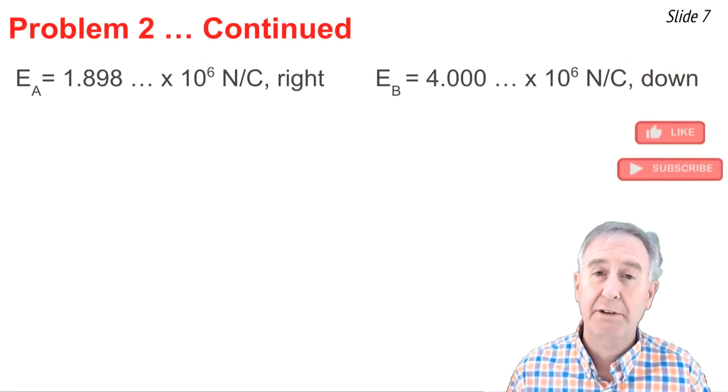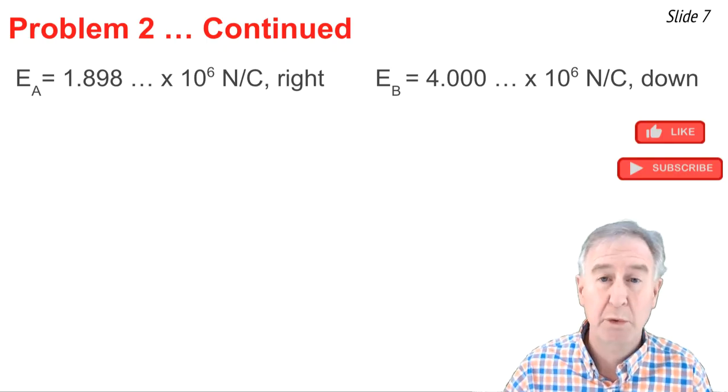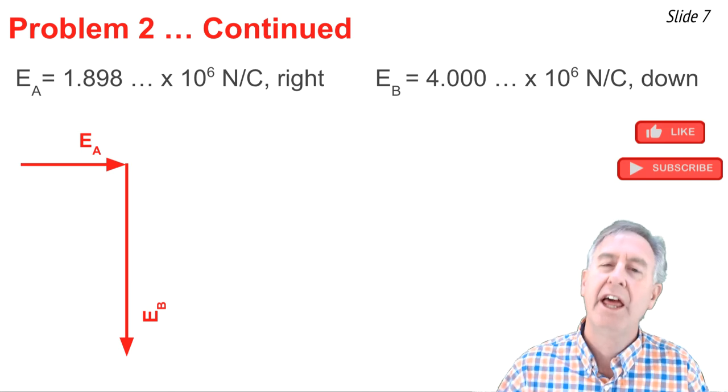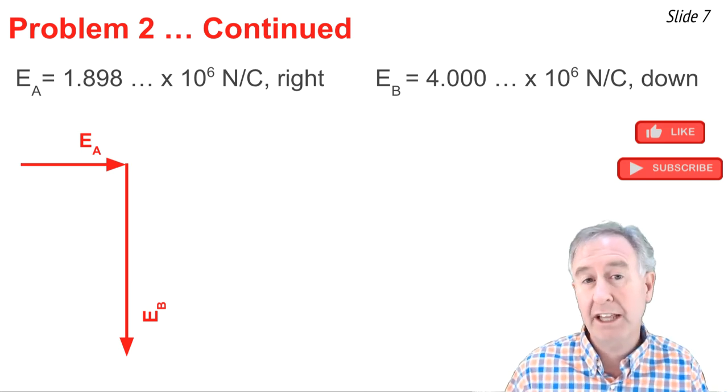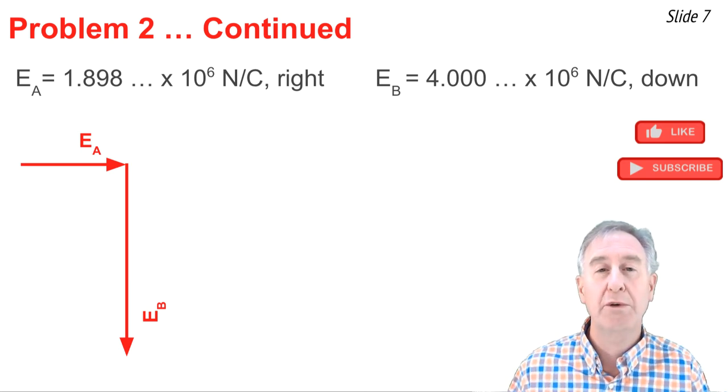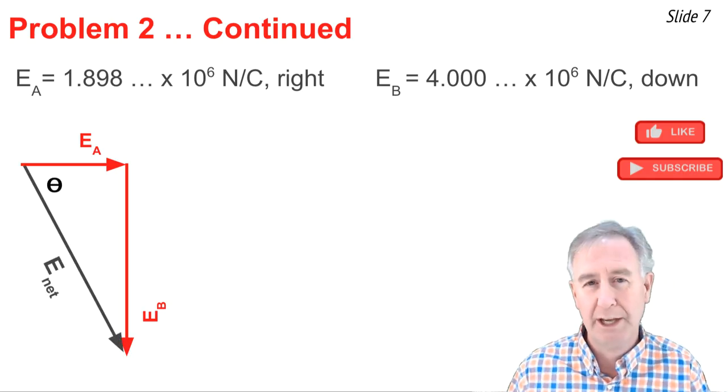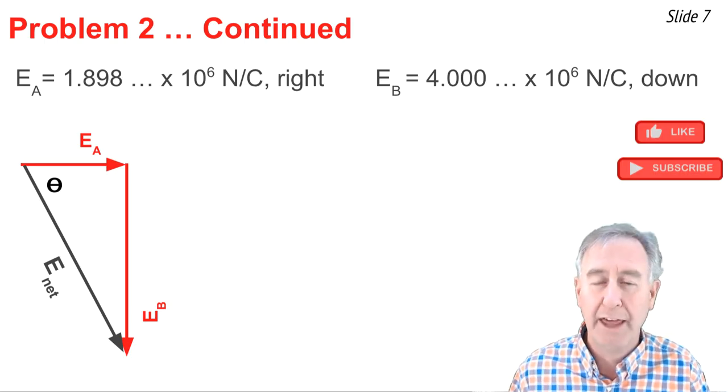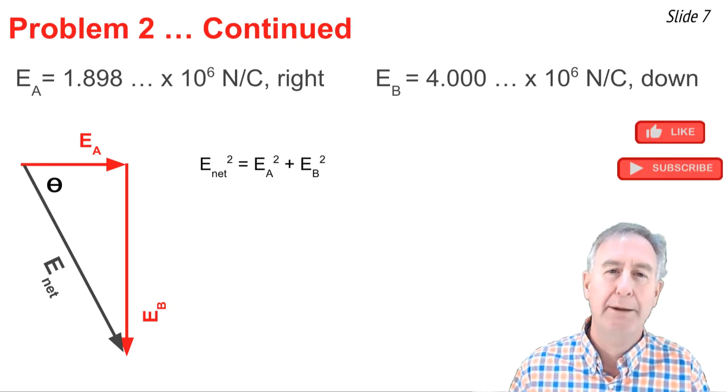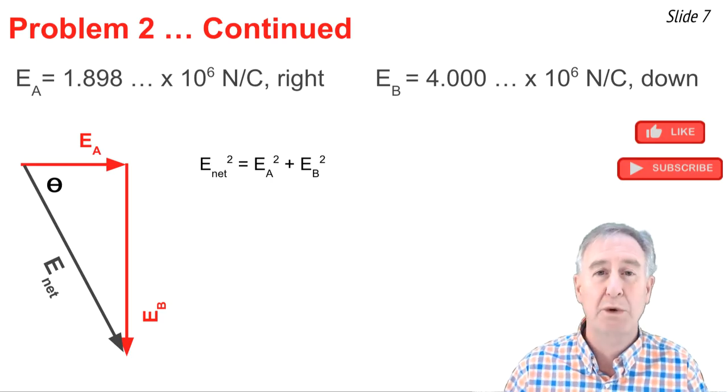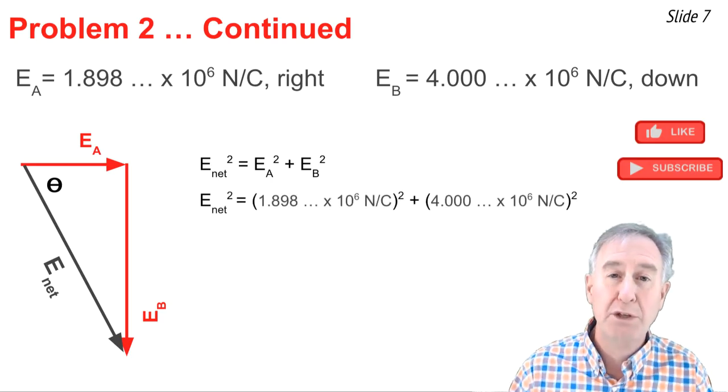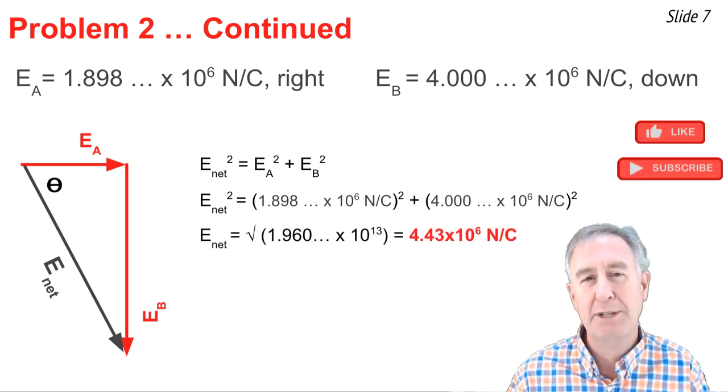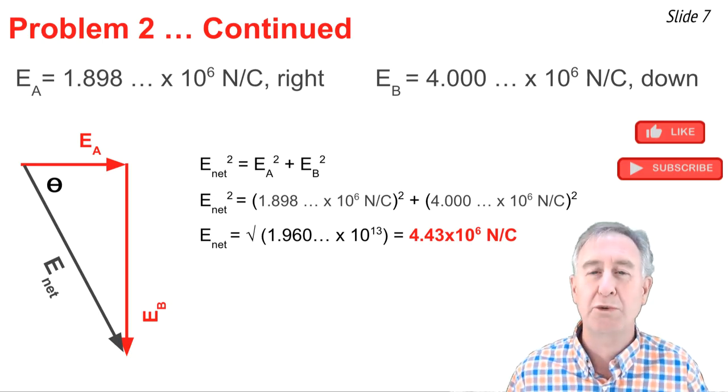So now to calculate the net electric field, I have to add the rightward vector and the downward vector together. So I draw them out, starting with the rightward vector, and to its arrowhead, I add the downward vector, and the electric field, the net electric field, is simply going to go from the tail of EA to the arrowhead of EB, and I've drawn it there. It's the hypotenuse of a right triangle, and I want to calculate it using Pythagorean theorem. So I set it up as E net squared, the hypotenuse, is equal to EA squared plus EB squared. I substitute in my calculated values of EA and EB, and I solve for the net electric field. It comes out to be 4.43 times 10 to the 6 newtons per coulomb.